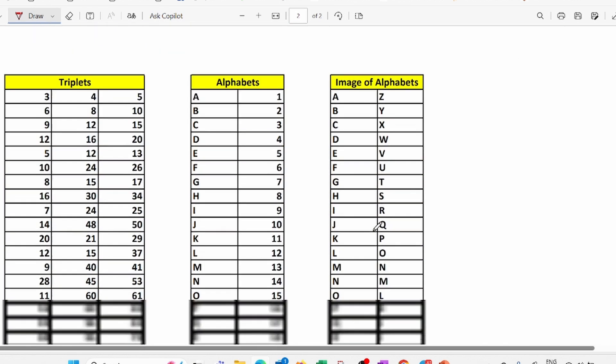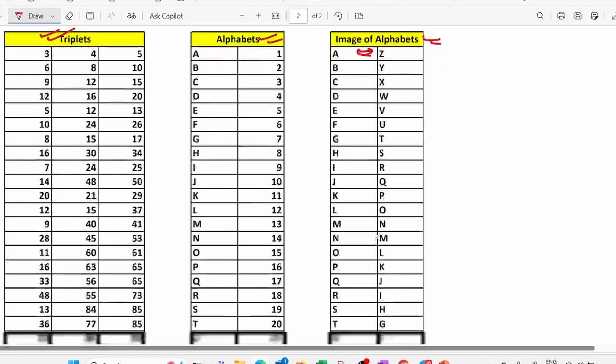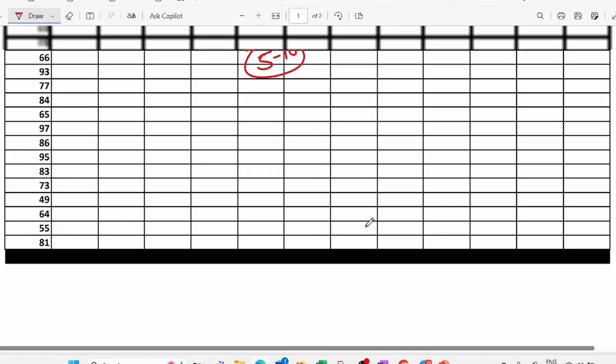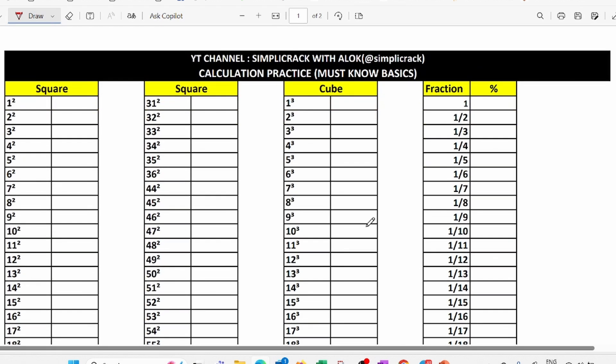I have also given some additional things in this sheet. Like these are Pythagorean triplets. This you should remember. You will learn this in trigonometry. Then there is alphabets. Then there is image of alphabets like opposites. So these all things you need to remember for your speedy calculation. Then I have given this answer for the additional table that I have shown you before. And I have also given squares, cubes and fractions that you need to practice daily. This sheet I will share on my telegram channel. The link of the telegram channel you can find in the description below.